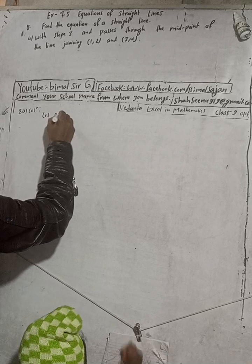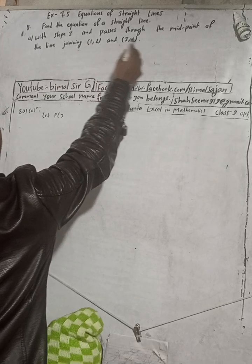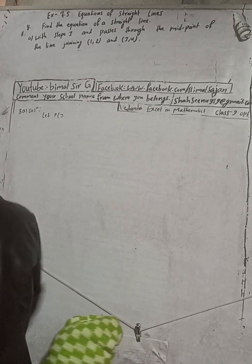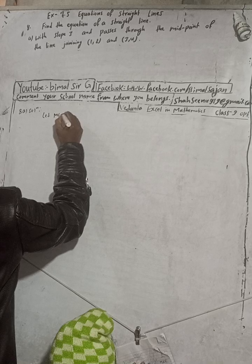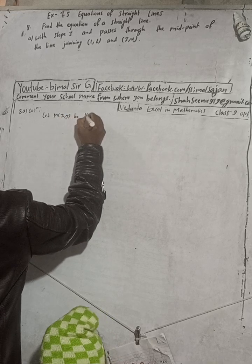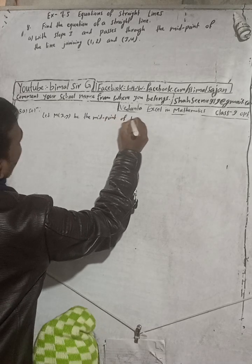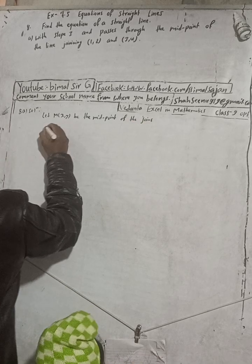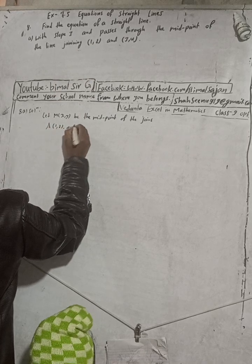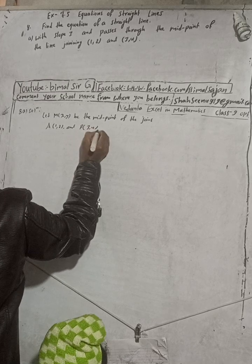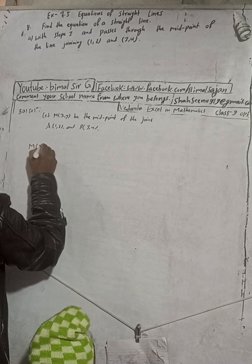Let M(x, y) be the midpoint of the line joining point A(1, 2) and point B(3, 4). Now by the midpoint formula, x comma y means — we apply the midpoint formula to these two given points.